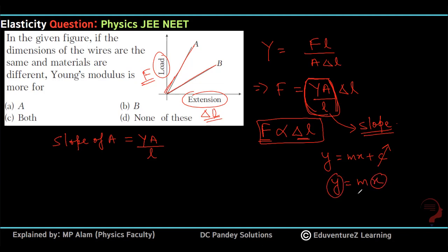Extension is directly proportional. This is the slope. Now imagine slope of A is greater than slope of B.